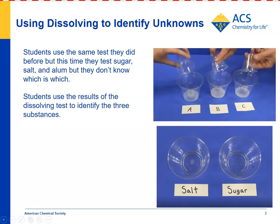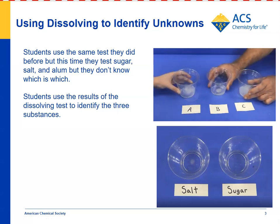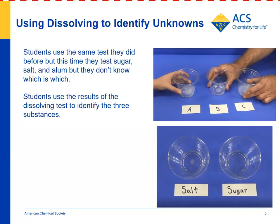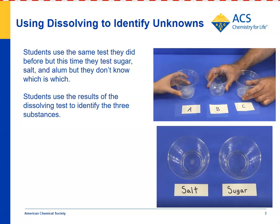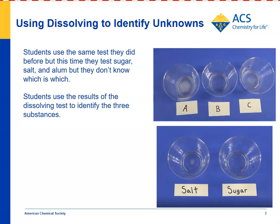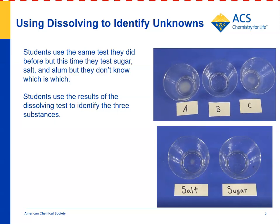Again, the best way to do a fair test here is to add the same amount of each substance to the same type of cup, add the same amount of water at the same time, swirl in the same way, and then observe results. Students find that letter B dissolved completely, which agrees with what happened to sugar in the previous experiment.